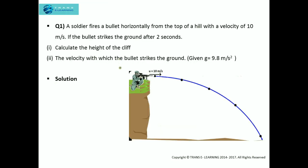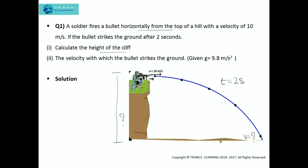The first question: a soldier fires a bullet horizontally from the top of a hill with a velocity of 10 meters per second. So the initial velocity with which the bullet is fired is 10 m/s. This bullet strikes the ground after 2 seconds, so the time of flight is 2 seconds. We need to calculate the height of the cliff and the velocity with which the bullet strikes the ground. The acceleration due to gravity is given as 9.8 m/s².